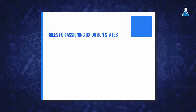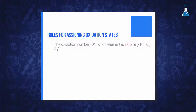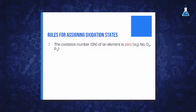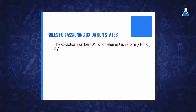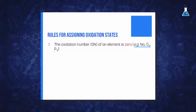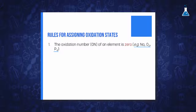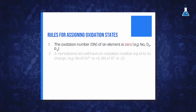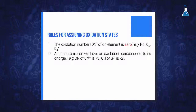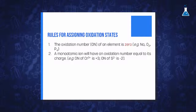The first rule: the oxidation number of an element, whether it is monoatomic, diatomic, or polyatomic, is zero. For example, sodium, oxygen, or phosphorus all have an oxidation number of zero. Monoatomic ions will have an oxidation number equal to their charge.